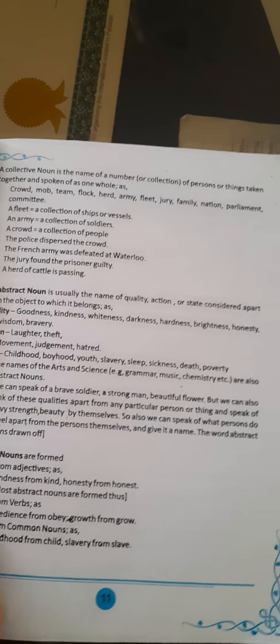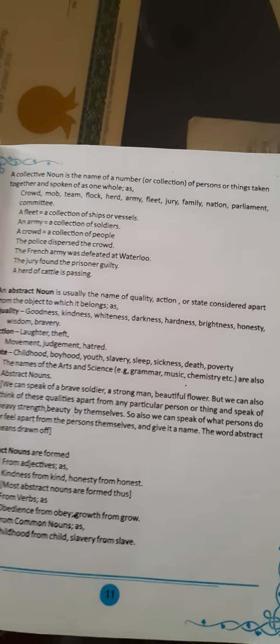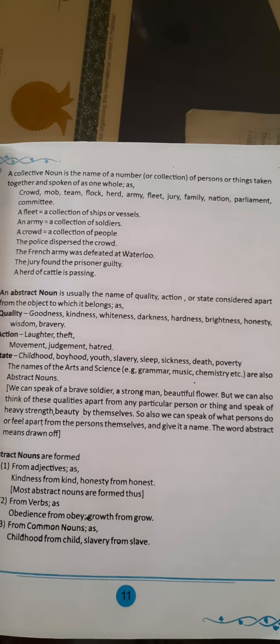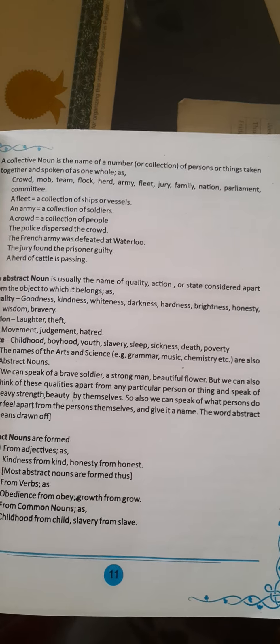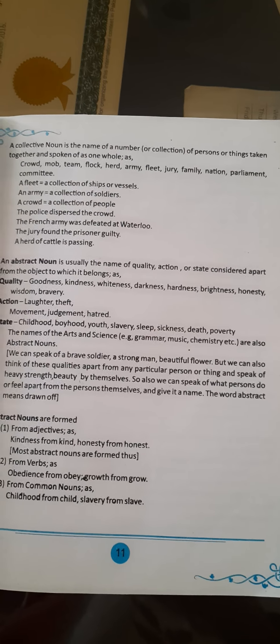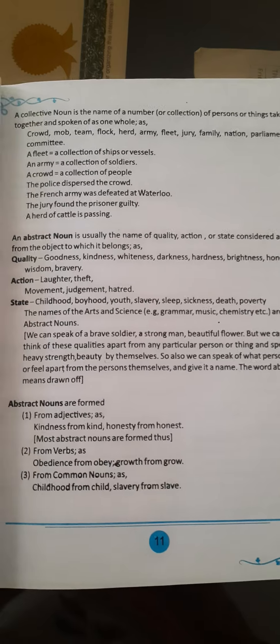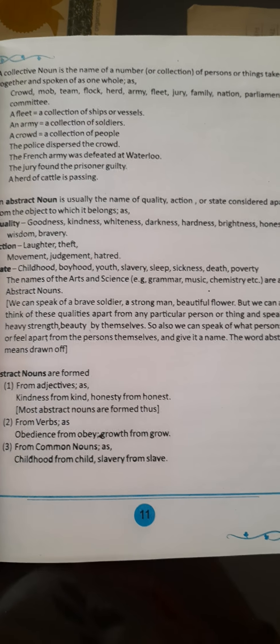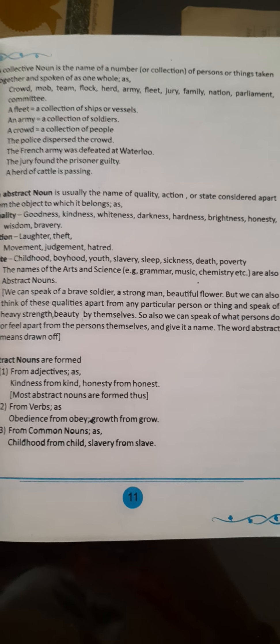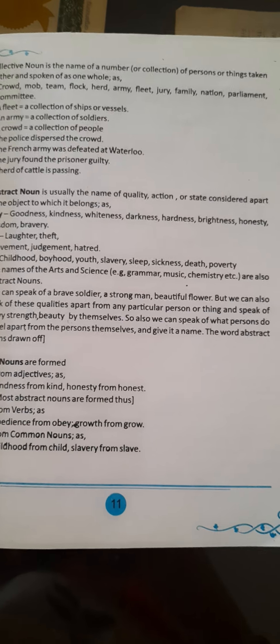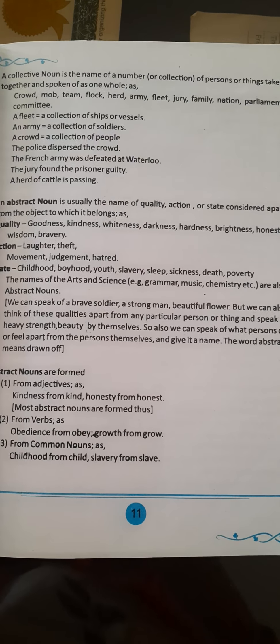Common nouns include what are called collective nouns and abstract nouns. A collective noun is the name of a number or collection of persons or things taken together and spoken of as one whole — one word used for a number of people is a collective noun. Examples: crowd, mob, team, flock, herd, army, fleet, jury, family, nation, parliament, committee.